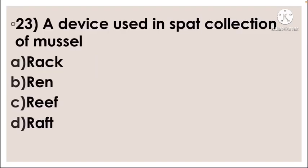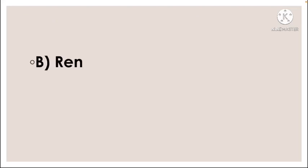Next question: A device used in spat collection of mussel — option A rack, option B ren, option C reef, option D raft. The correct answer is option B, ren.